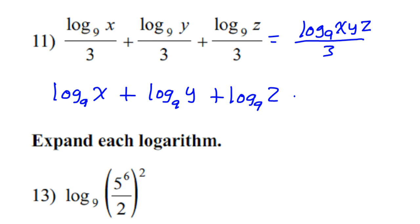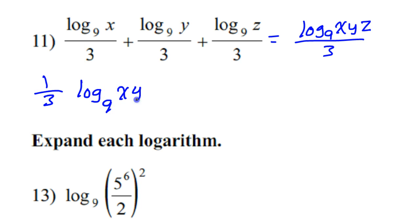Okay so so far we have that. All right but this is the same thing as having like one third log base 9 of xyz. So when you're condensing you can take this number in the front this coefficient and you can make it become the power so this would be the same thing as log base 9 of xyz to the one third power.